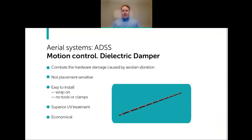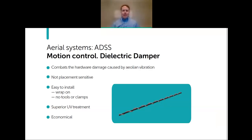Motion control: when looking at a dielectric damper, we're combating damage caused by vibration. A steady wind cutting across the cable creates very high-frequency, low-movement vibration—like a guitar string being plucked. As that vibration moves down, the dielectric damper absorbs it, keeping your hardware safe and allowing it to last much longer. It's a very low-cost upgrade, and we recommend everybody use this across the board—low cost, easy to install, and crucial to the longevity of your network.